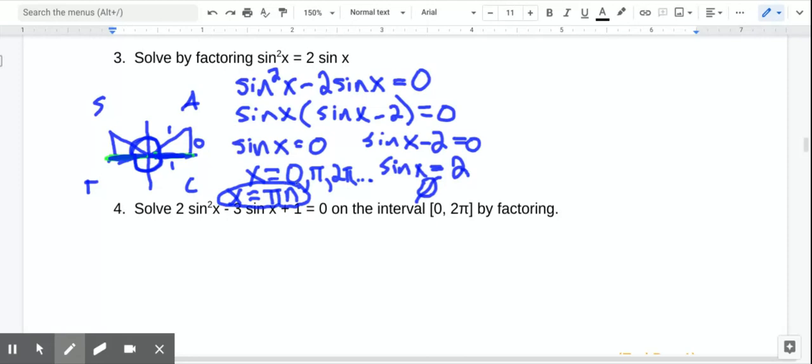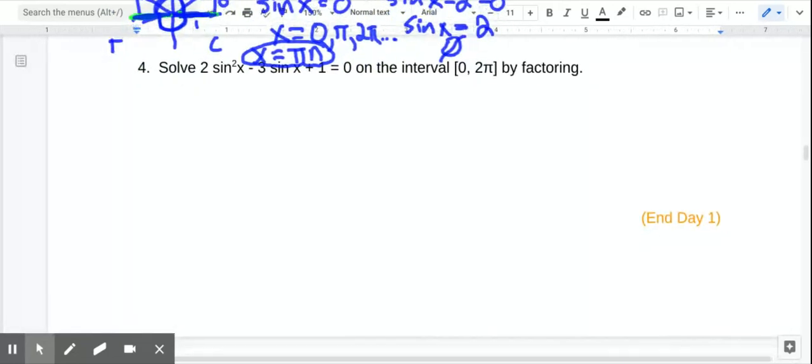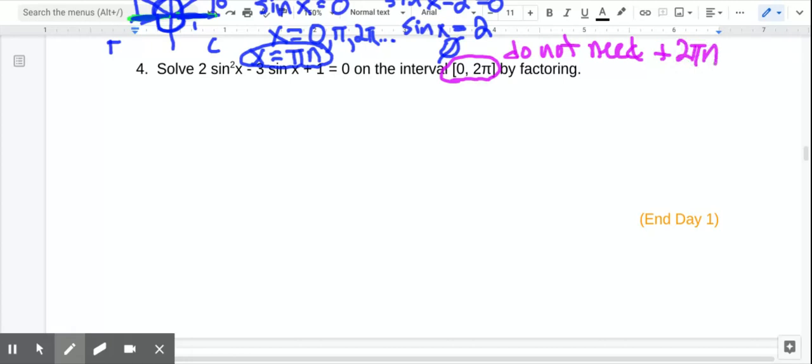All right, this last one, we want to solve on the interval from 0 to 2 pi by factoring. Now, this should excite you, because this means that we do not need the plus 2 pi n or the plus pi n. It's only asking for the solutions one time around the circle. So these problems are actually easier.